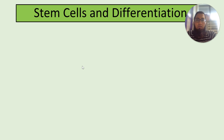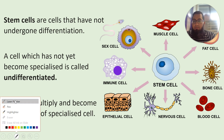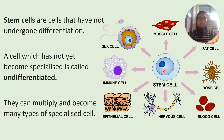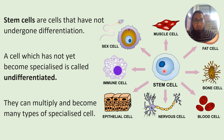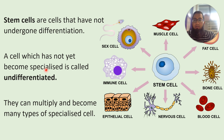In this video we'll be going over what are stem cells and what is differentiation. Right in the center you see a cell called a stem cell. These cells have not become anything — they have not yet specialized. Specialized and differentiated mean the same thing, so you can use either word in the exam. This stem cell is unspecialized or undifferentiated.